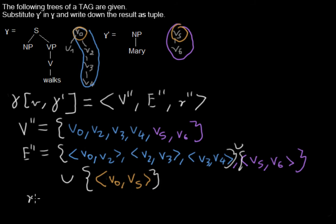And the root node of the new tree, R2, is the same as from the first tree. So in this case it's V0, from the tree we are doing the substitution into it.